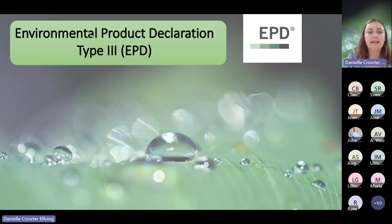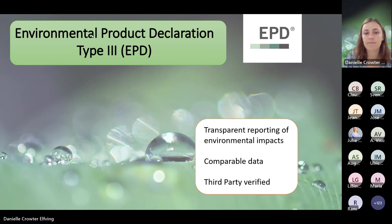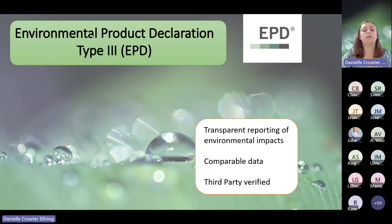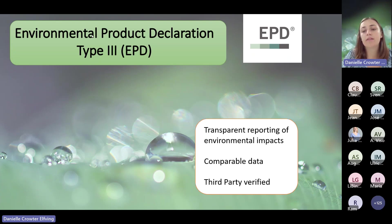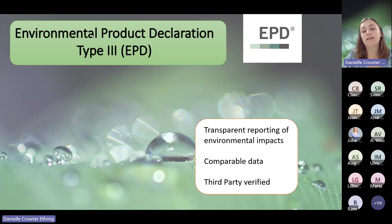So, what is an EPD? An EPD is also called a Type 3 product declaration. The purpose of an EPD is to be able to present environmental data in a transparent and public way, and the aim is for the data to be comparable between products. Also, the third-party verification makes the data trustworthy.